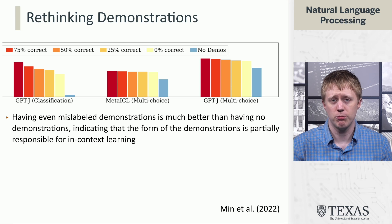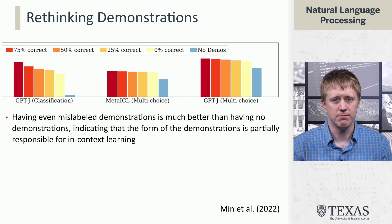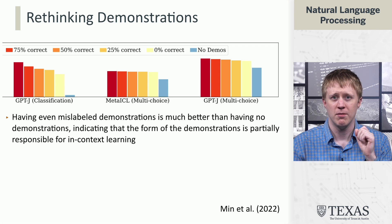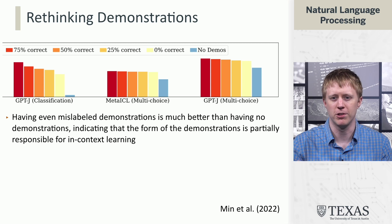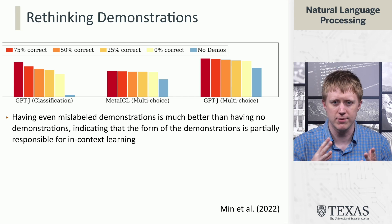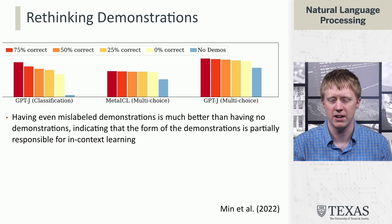They look at the percentage of correct labels in demonstrations and do find it's better to have correct labels — there's a small benefit. But it's much less than, say, a traditional machine learning model where flipping half the labels would cause the model to completely fail, probably not even converge. This is an interesting result showing that even though few-shot learning is powerful, it's not always doing what we think, and it's certainly not learning from examples in a traditional manner.